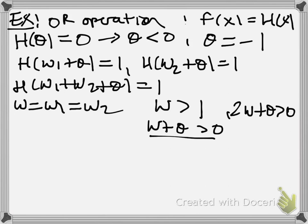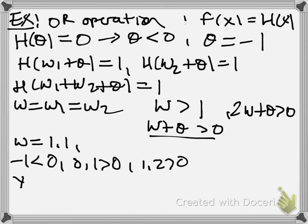So, just pick whatever we like. In this case, let's take w to be 1.1. And so, we get all of our restrictions satisfied. We have minus 1 is less than 0. We have 0.1 is greater than 0. And, we have 1.2 is greater than 0. So, our OR perceptron, in this case, is y equals h of 1.1 times x1 plus 1.1 times x2 minus 1. And, that's our OR perceptron.